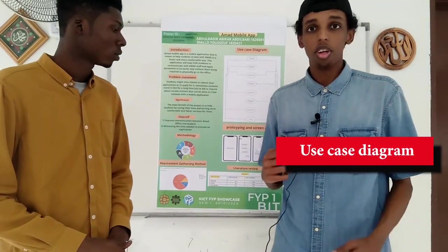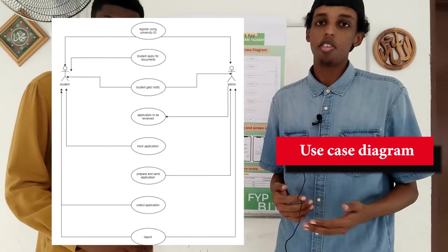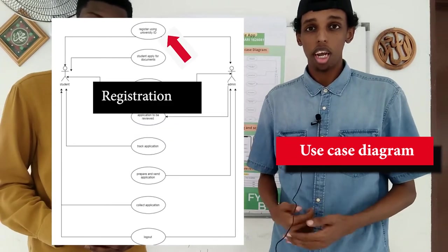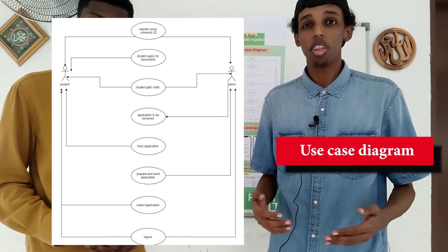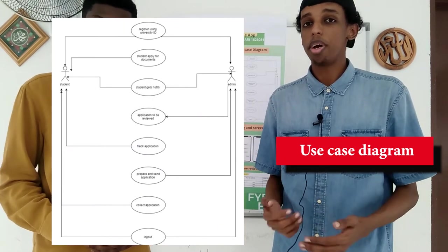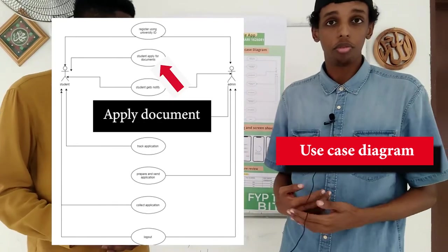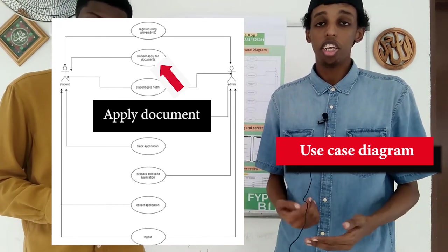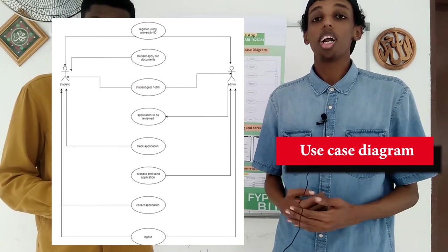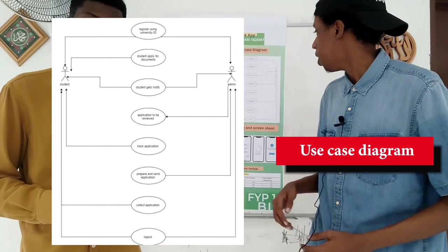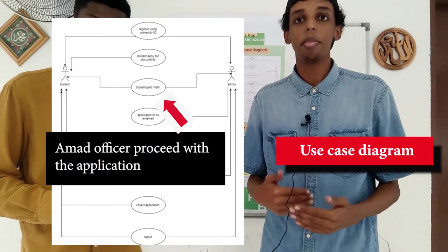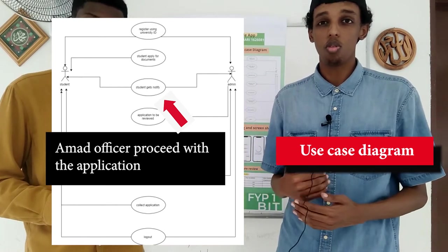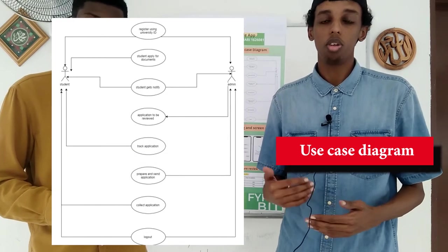Going to the use case diagram, there are two main actors in this system: the first actor is the student, and the second actor is the Ahmad Officer. The first step will be students registering into the application using their university ID — the matric number and password. The second step will be students applying for documents; they will have a list of documents to apply for. These main documents were generated from data collection where we asked students what their reasons were for visiting Ahmad Office. The third step will be the Ahmad Officer processing the application, receiving all student information and proceeding with the relevant document.